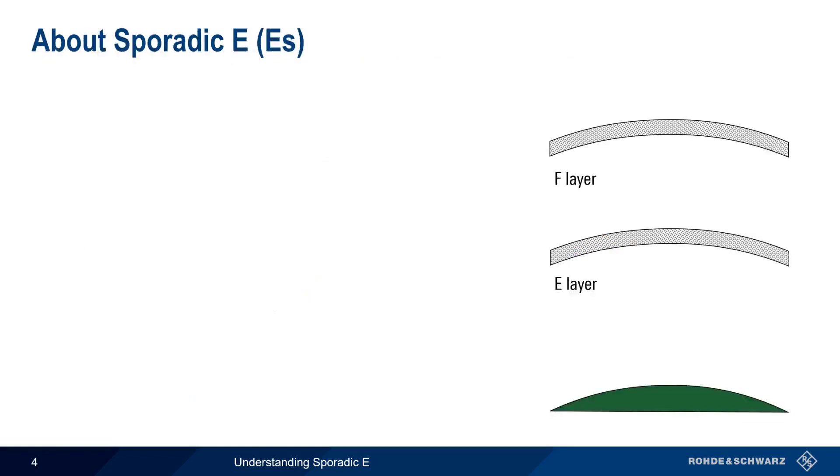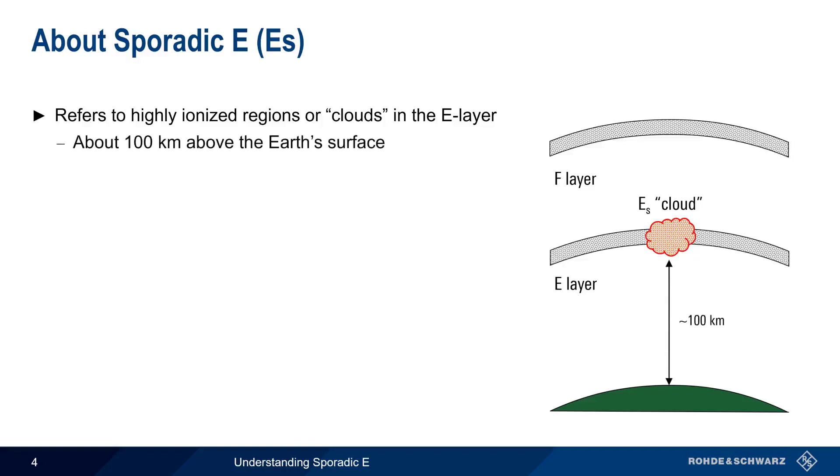Sporadic E, sometimes also called ES, refers to propagation by means of these highly ionized regions, or clouds, in the E layer of the ionosphere. This phenomenon takes place at altitudes of about 100 kilometers above the Earth's surface, and can last for minutes or even up to an hour or more.